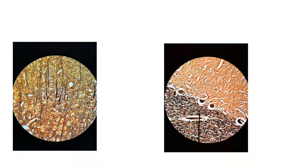In this microscope slide, what you're seeing are actually a couple of things. These cells right here that look like little triangles are called pyramidal cells, or pyramidal cells, because they look like little pyramids.